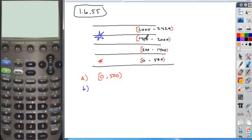And so if you look at that, the lowest limit is 1400, the highest limit is 2429. You include the lower limit for this but you do not include the upper limit. And so that would be your interval notation for B.